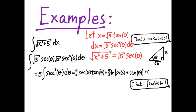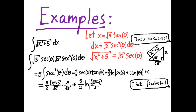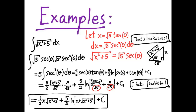Then you need the triangle to rewrite back in terms of x. The triangle comes from x over square root of 5 being opposite over adjacent, and from that you find secant theta and tan theta. An interesting thing happens: the square root of 5 inside the logarithm is just a constant multiplying the argument, and by properties of logarithms you can subtract it off and redefine the arbitrary constant. The simplified answer is one-half x times square root of x squared plus 5, plus five-halves natural log of x plus square root of x squared plus 5, plus C. Differentiate this to verify it simplifies back to square root of x squared plus 5.